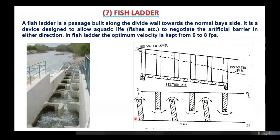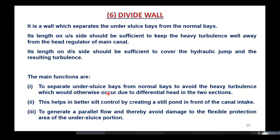The third function of the divide wall — generating parallel flow — means that due to the difference in water levels there is turbulence, and the wall separates the two flows so the flexible apron can be protected. If the waters were mixed, it would be difficult to protect the flexible protection area.